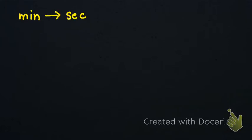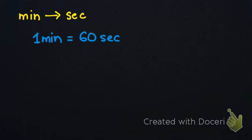We know that in one minute we have 60 seconds. So when we are going to convert from minutes to seconds, what we are going to do is multiply by 60.